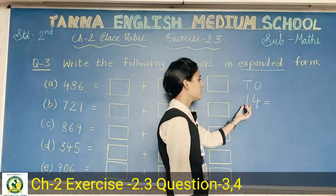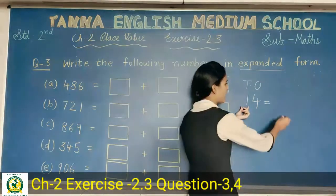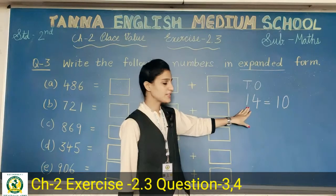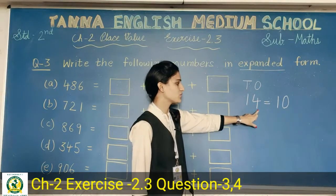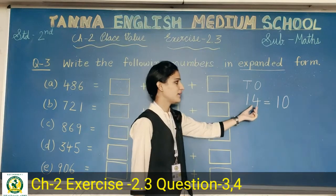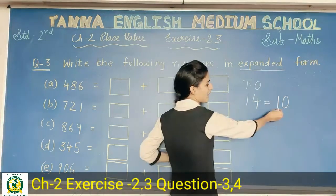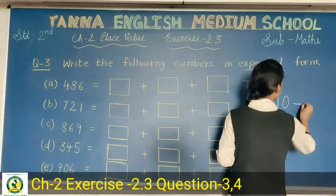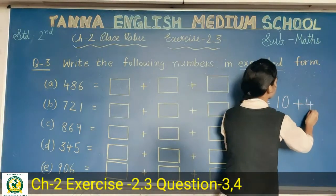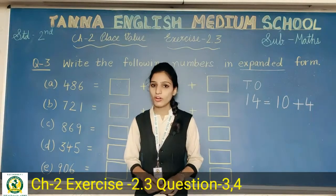This one is at tens place and this four is at ones place. So if we write fourteen in expanded form, the one is at tens place and one ten means ten. So we write ten, then plus four — four is at ones place. This is the expanded form of the number fourteen, which is a two-digit number.